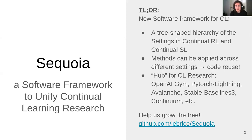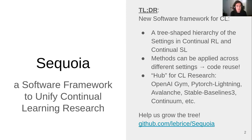The main takeaways of this talk are that we introduced Sequoia, a new software framework for continual learning, in which we create a tree-shaped hierarchy of pretty much all the settings in continual reinforcement and continual supervised learning. Doing so, we're able to reuse methods across settings. Sequoia is meant to be a hub for continual learning research and benefits from advancements in many different specialized frameworks, such as these.